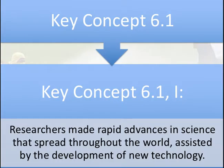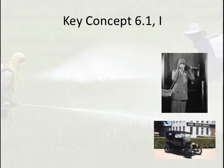Key Concept 6.1, Roman numeral 1 says that researchers made rapid advances in science that spread throughout the world, assisted by the development of new technology. Period 6 is kind of like a catch-all — it's very vague because it's difficult to include the movements and developments in a world with over 7 billion people. So knowing a ton of specifics isn't going to do you a lot of good. Learn basic ideas and big developments.